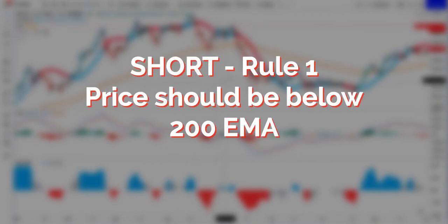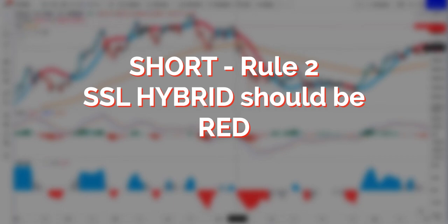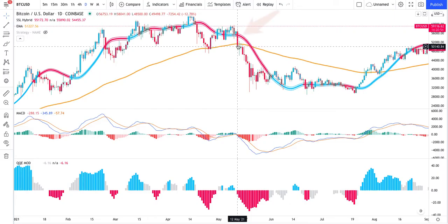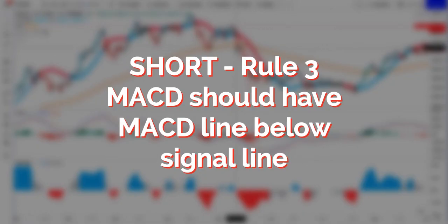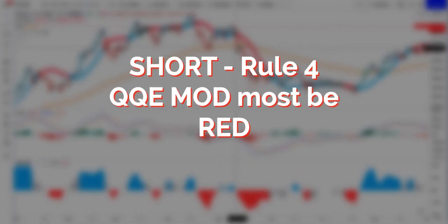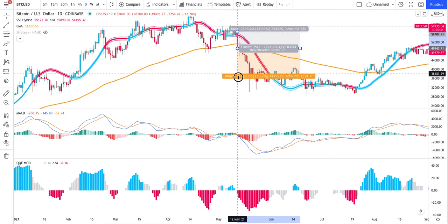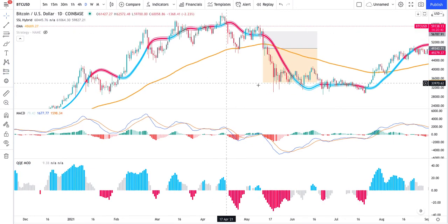The rules for entering a short will be as follows. The price must be below the 200 exponential moving average. SSL hybrid should be red. MACD should have the MACD line below the signal line. The QQE mod must be red in color. Our stop loss will be placed on top of SSL hybrid, and our take profit should be twice the distance of the stop loss.